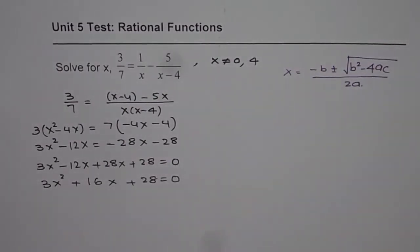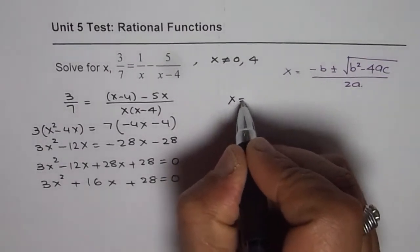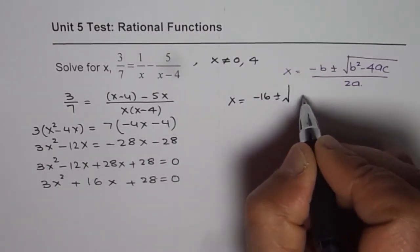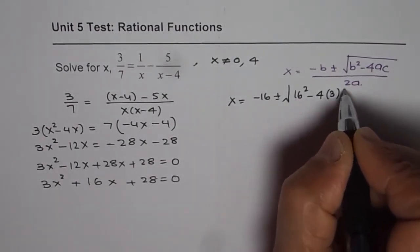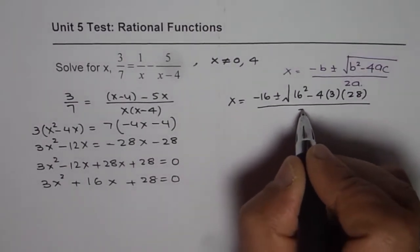Now in the given equation, we have a as 3, b as 16, and c as 28. So we can find the answer as x equals minus 16 plus minus square root of 16 square minus 4 times 3 times 28 divided by 2 times 3.